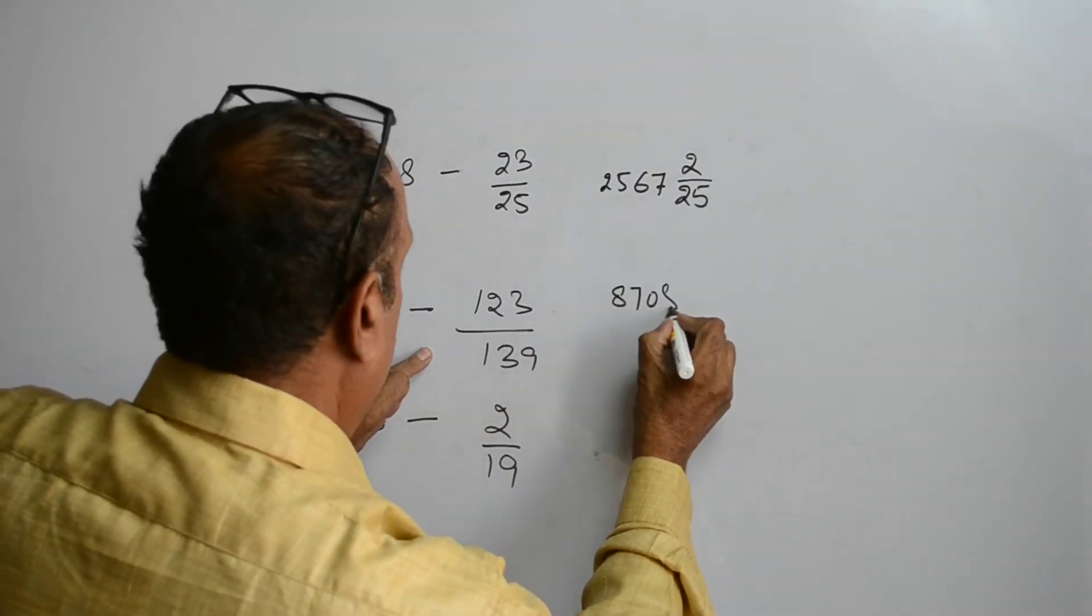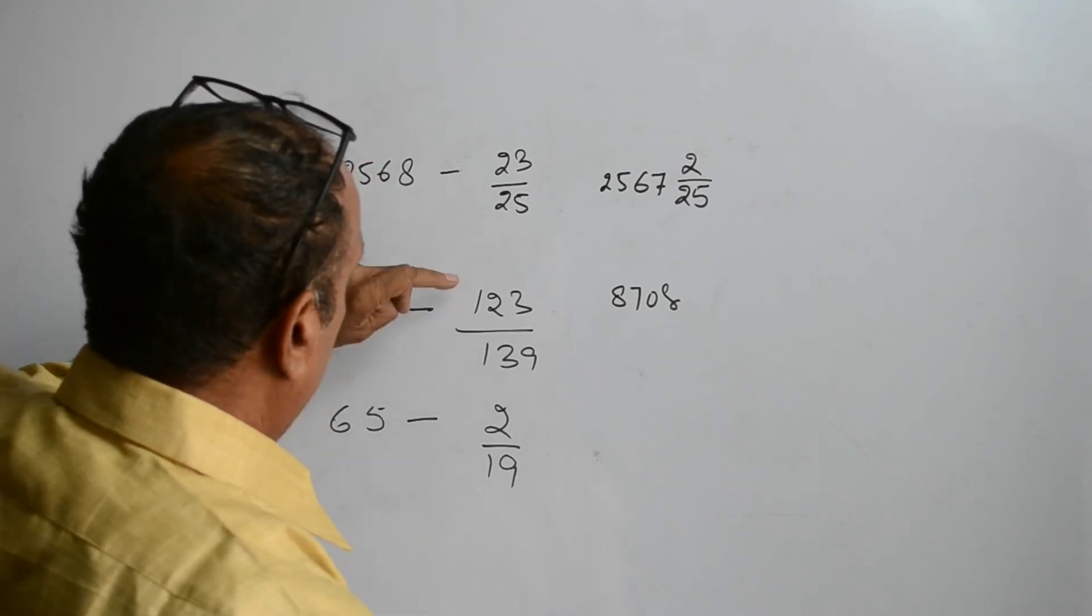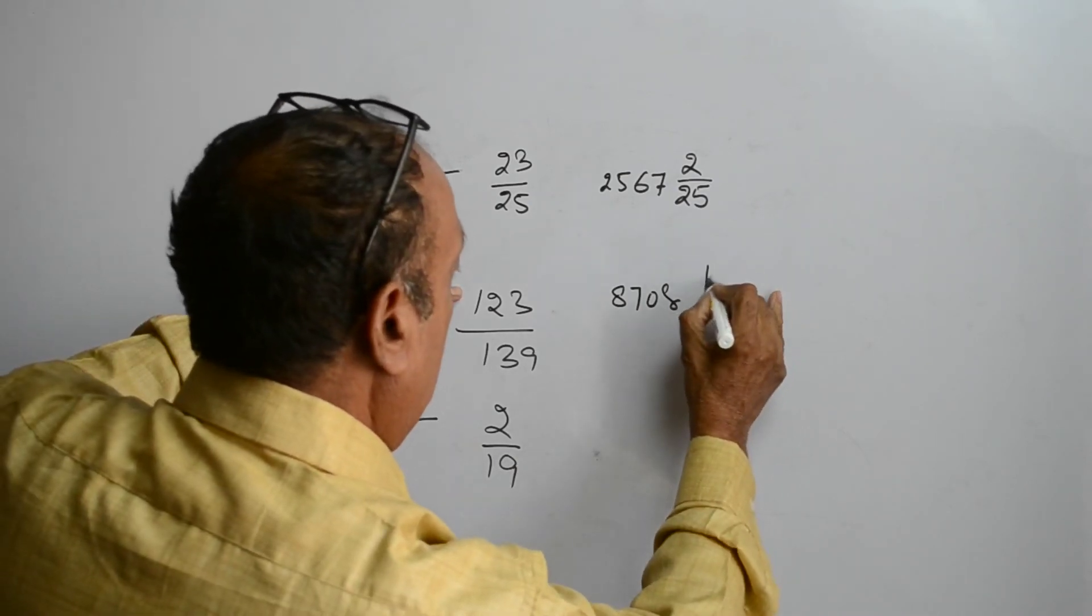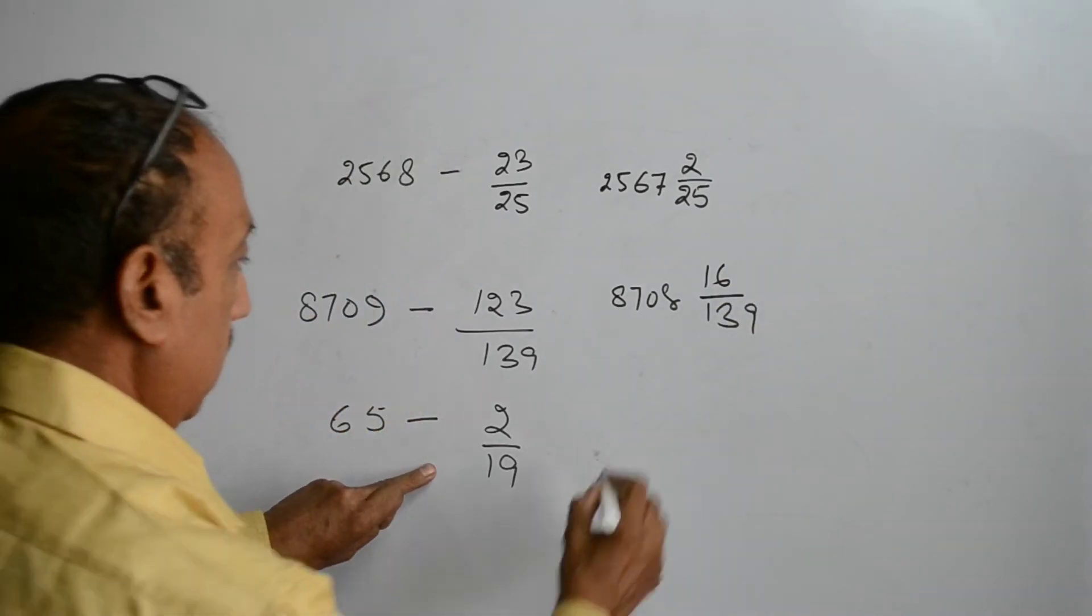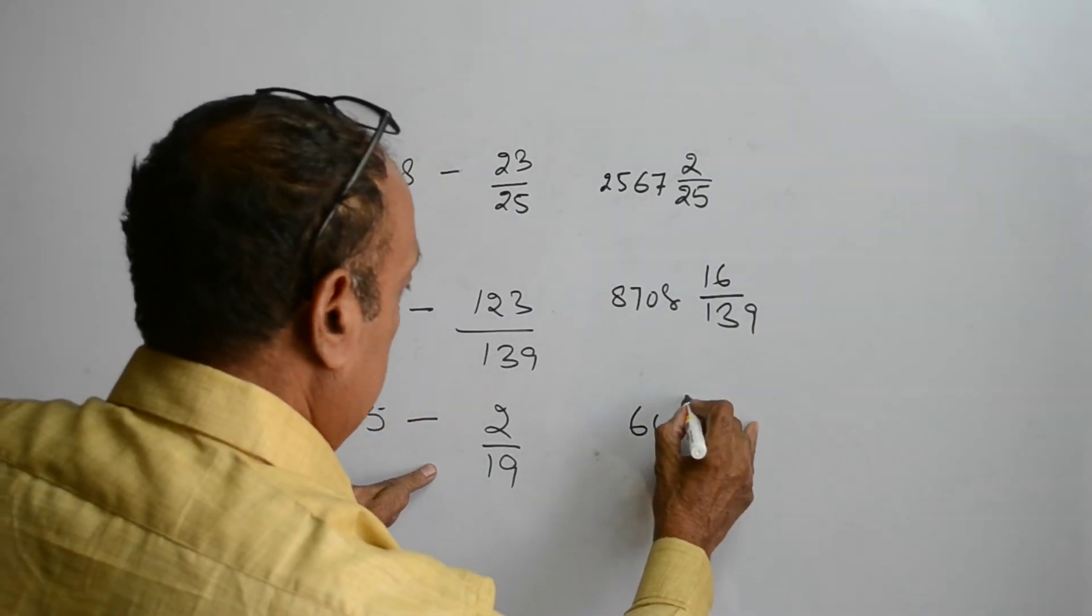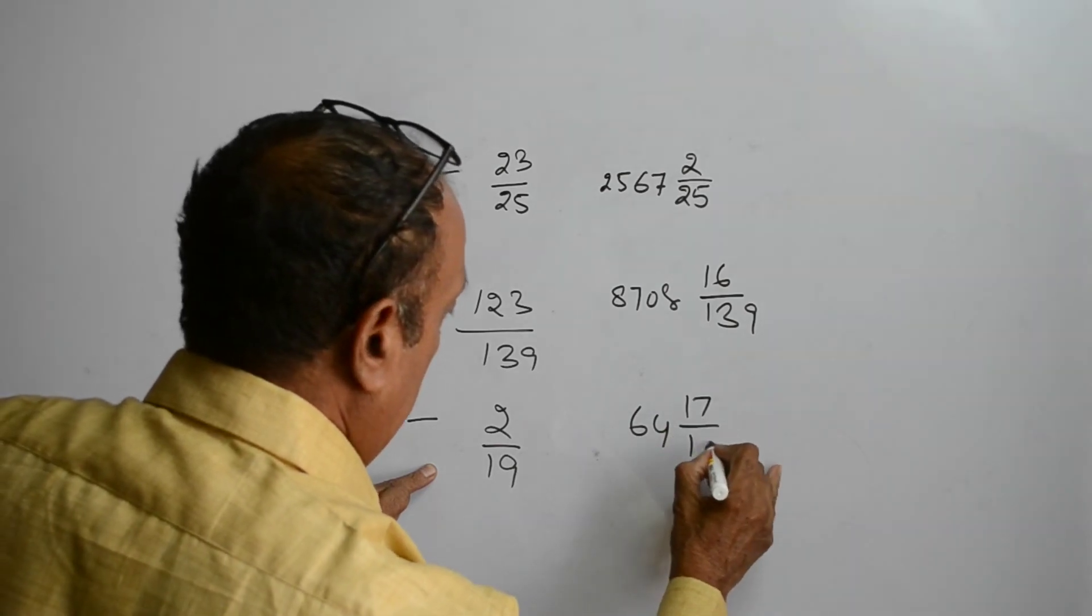The answer is 8708. 139 minus 123 is 16 upon 139. So here it is 64 and 17 upon 19.